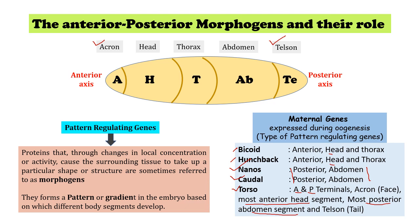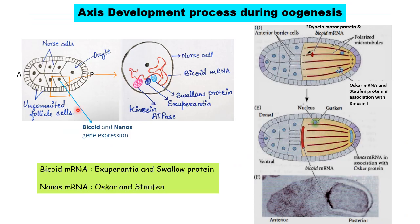These are the maternal genes that help in formation of anterior and posterior axis, but we should know that apart from these maternal genes there are various other proteins and translational activators or repressors involved. Those who have seen the first part of the Drosophila video will be familiar with this figure. During oogenesis, nurse cells start expressing some of the maternal genes, and the mRNA products of those maternal genes are transported to the oocyte, where they start determination of anterior and posterior axis even before the egg is fertilized.